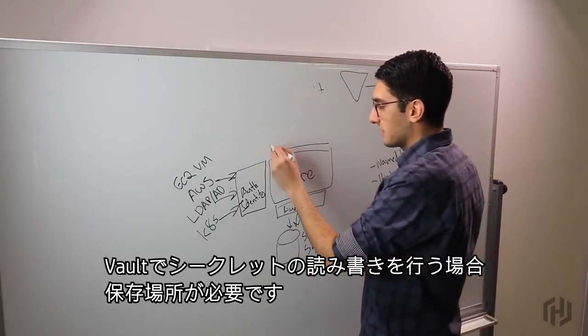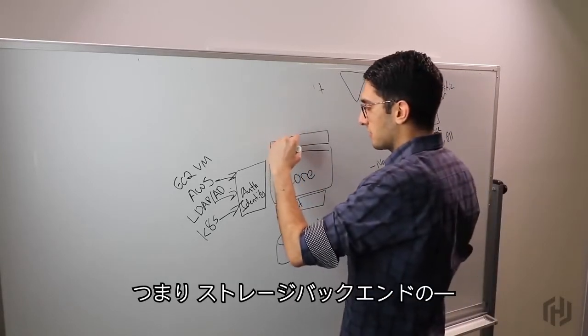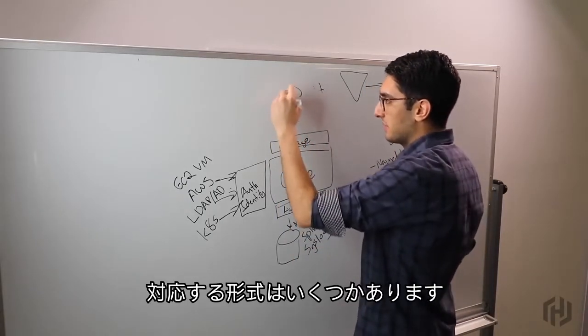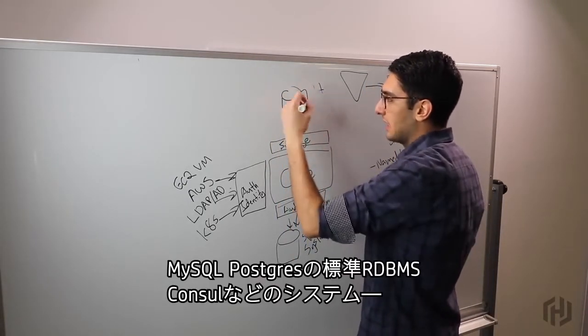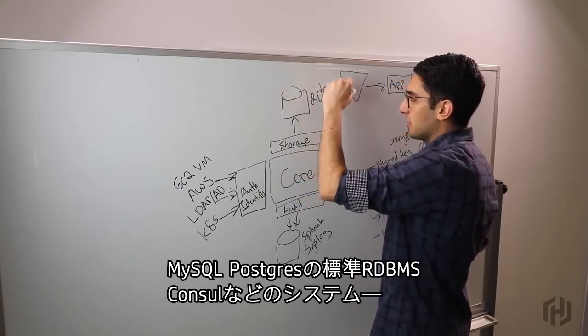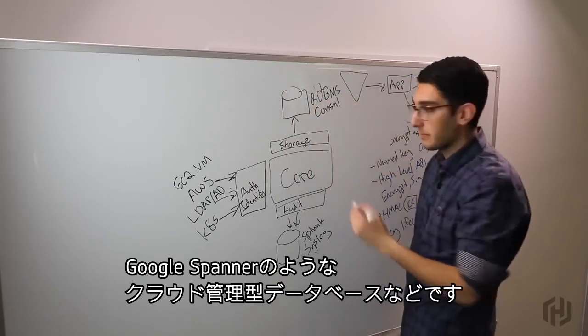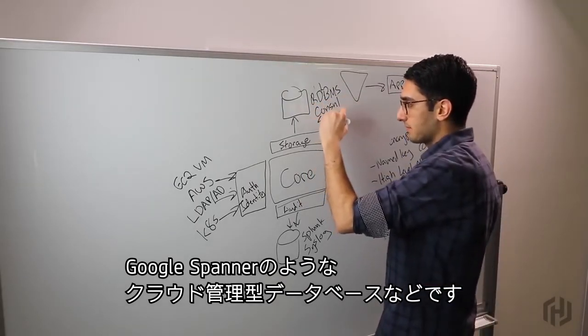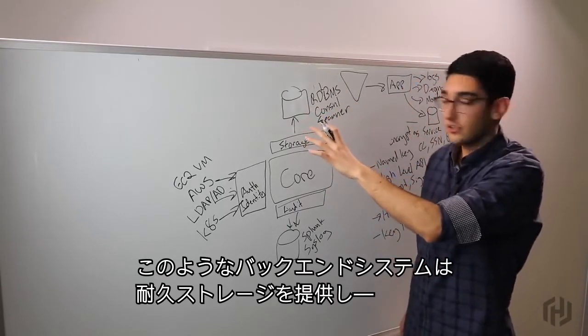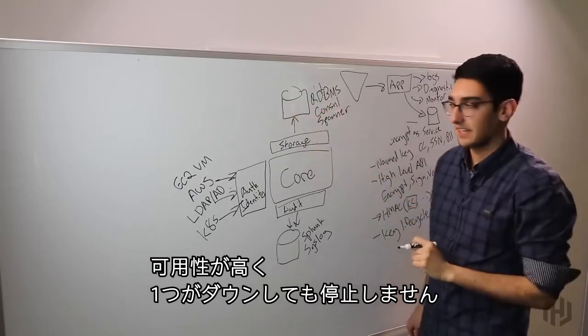The next level challenge is where does Vault actually store its own data at rest? So if we're going to read and write secrets to Vault, it needs to be able to store these things somewhere. And so these are what we call storage backends. Storage backends are responsible for storing data at rest. This can be really a couple of different things. It could be a standard RDBMS, so MySQL Postgres. It could be a system like Consul. It could be a cloud-managed database like Google Spanner. But the goal of these backend systems is to provide durable storage in a way that's highly available so that we can tolerate the loss of one of these backend systems.